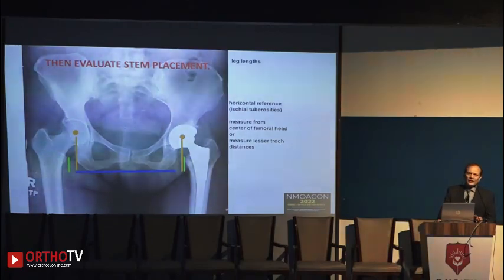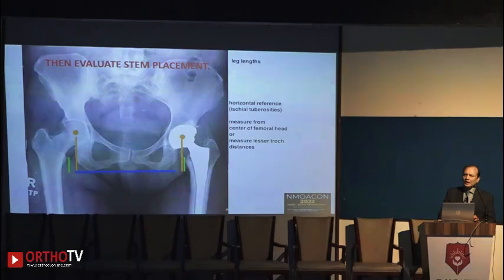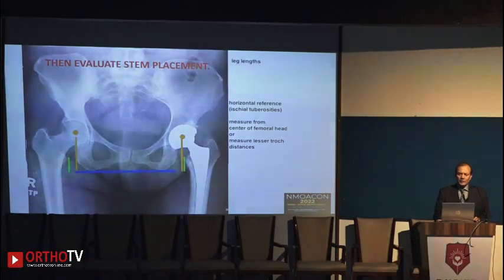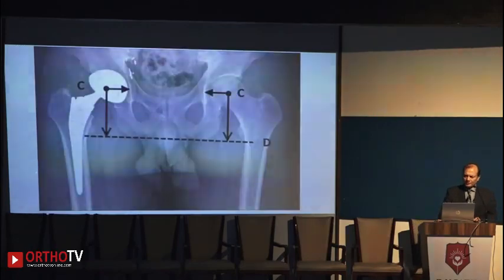Horizontal and vertical offset are important parameters. These give you an idea about limb length discrepancy and the placement of both the acetabular and femoral components.